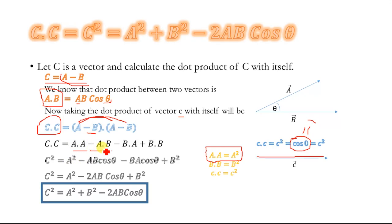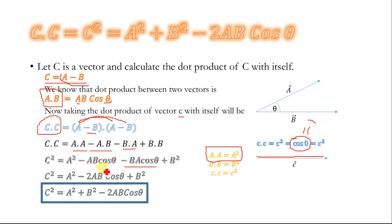Here, a dot b equals ab cos θ, so it becomes minus ab cos θ. Taking the dot product again, b dot a equals minus ba cos θ, and b dot b equals b squared. These two terms, minus ab cos θ and minus ba cos θ, add up with each other and become minus 2ab cos θ.